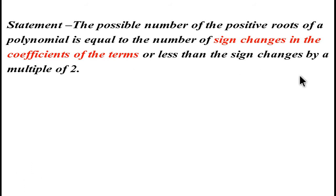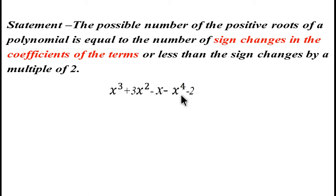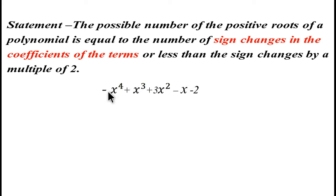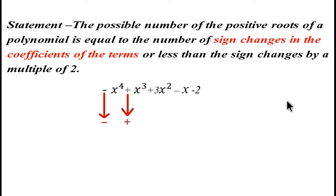Let us take an example. Let our polynomial be x³ + 3x² - x - x⁴ - 2. This polynomial is not in its general form, so we have to rearrange it. After rearranging, the leading coefficient is -1, so the first sign is negative, the second sign is positive, the third sign is positive, the fourth sign is negative, and the last sign is negative.